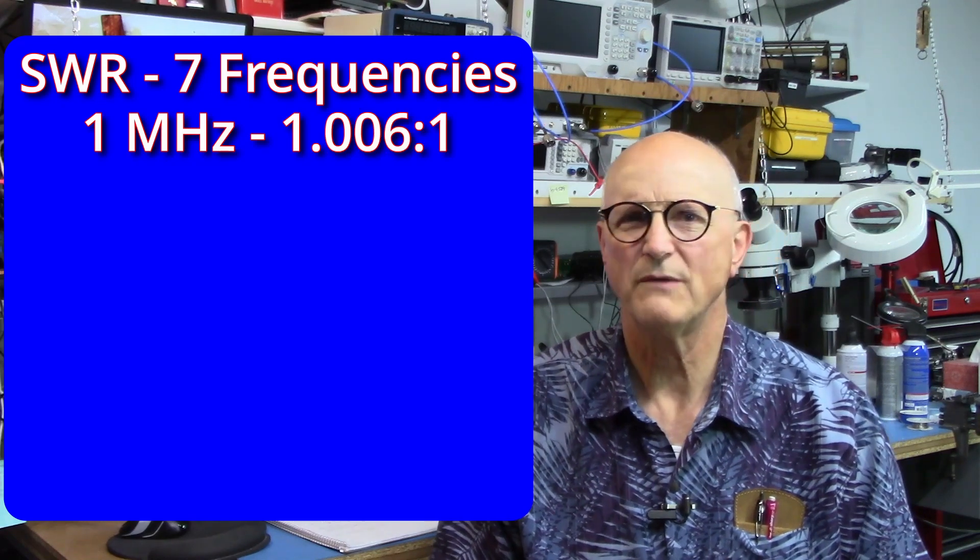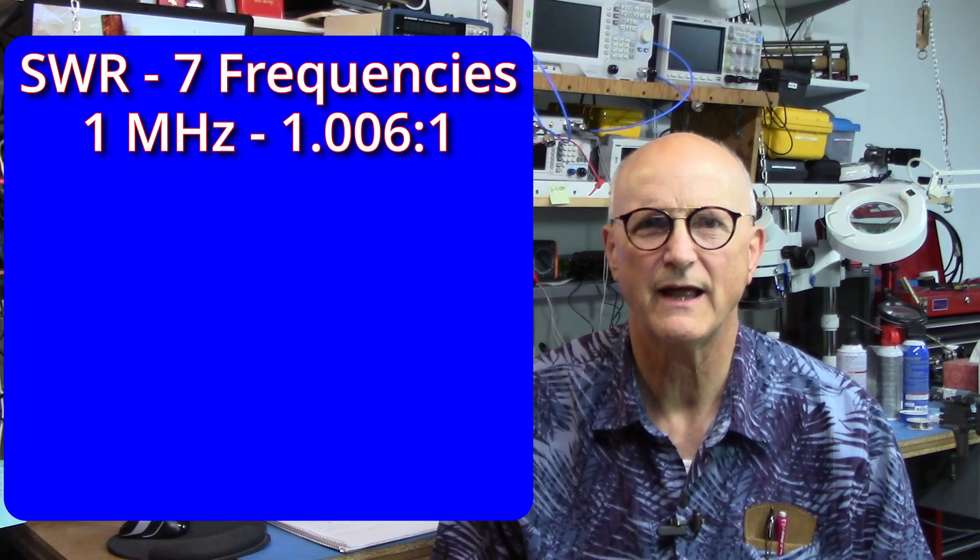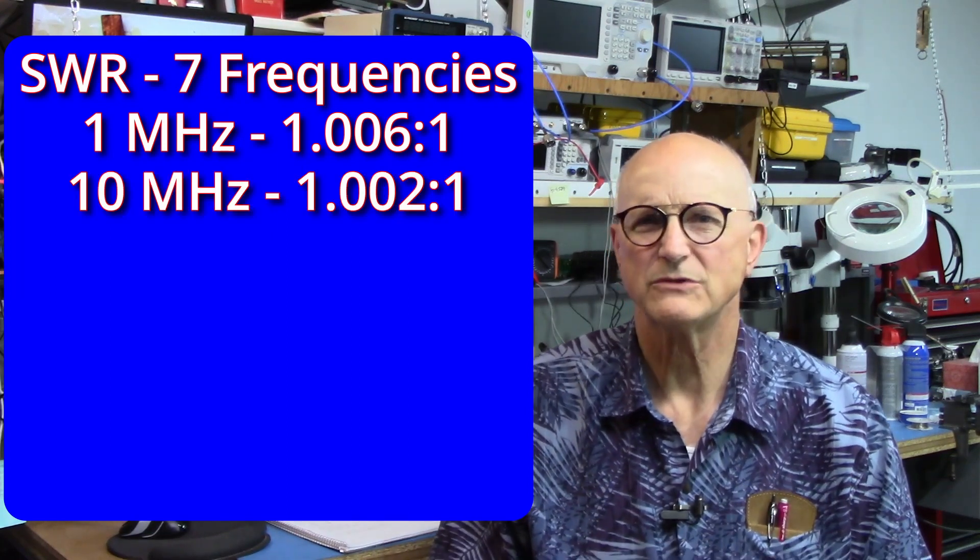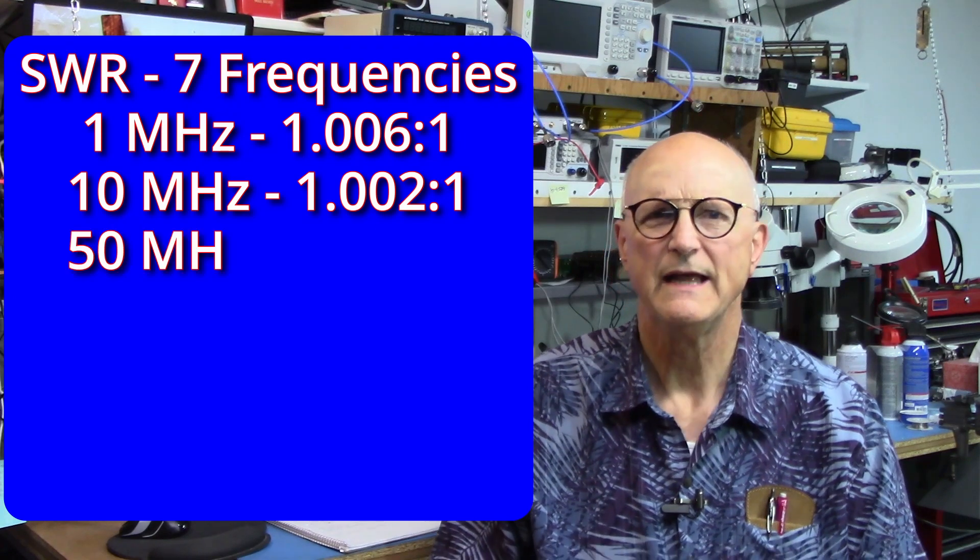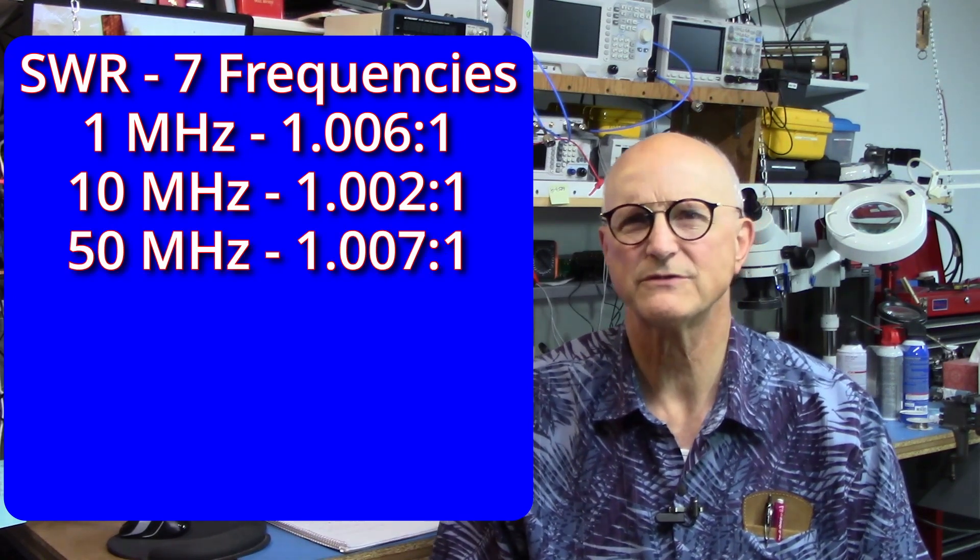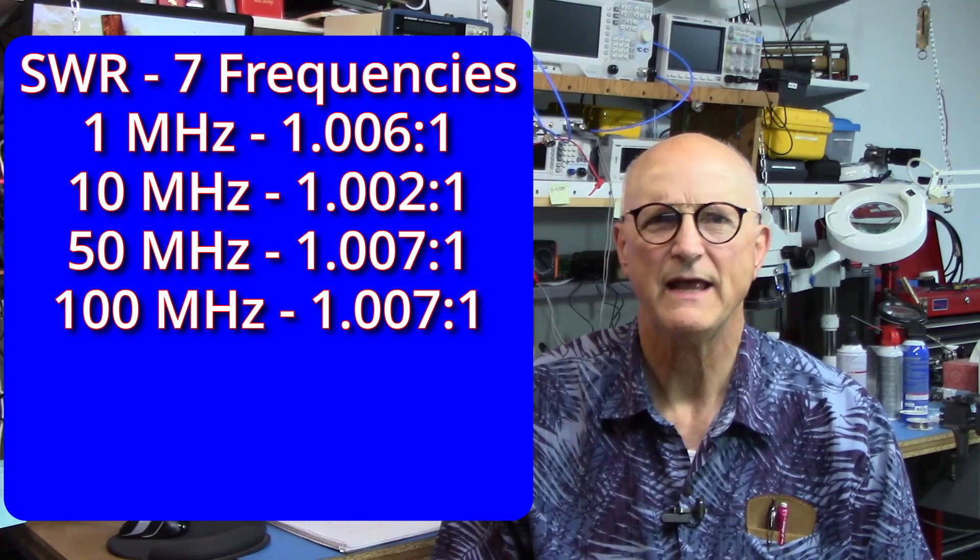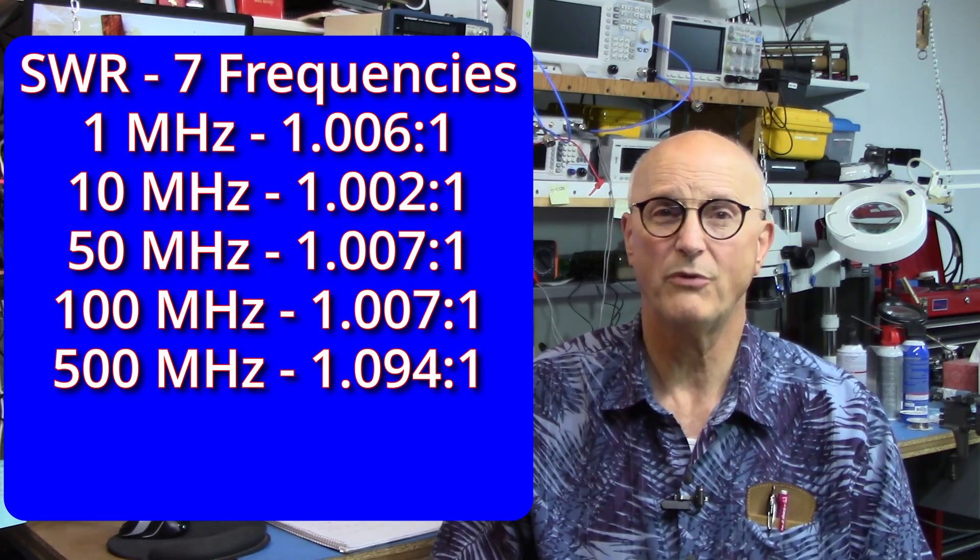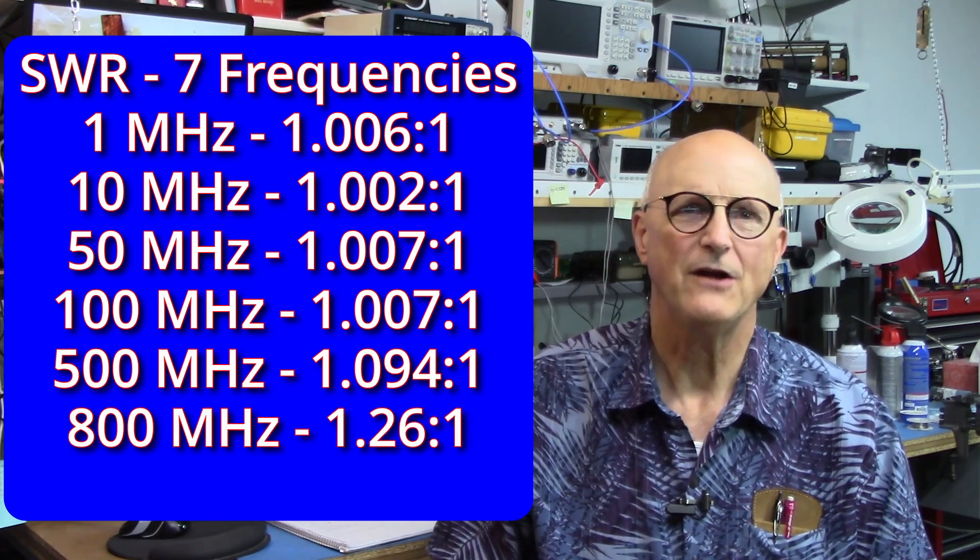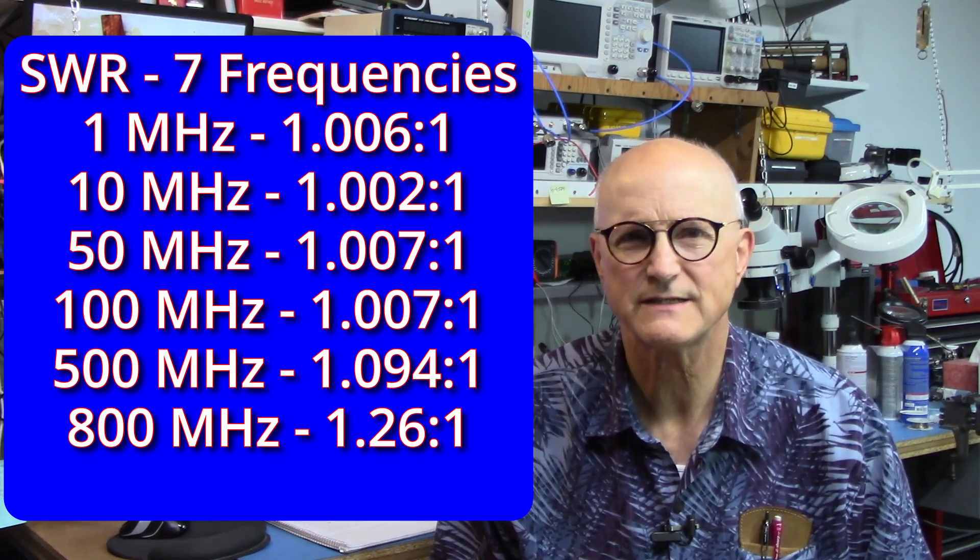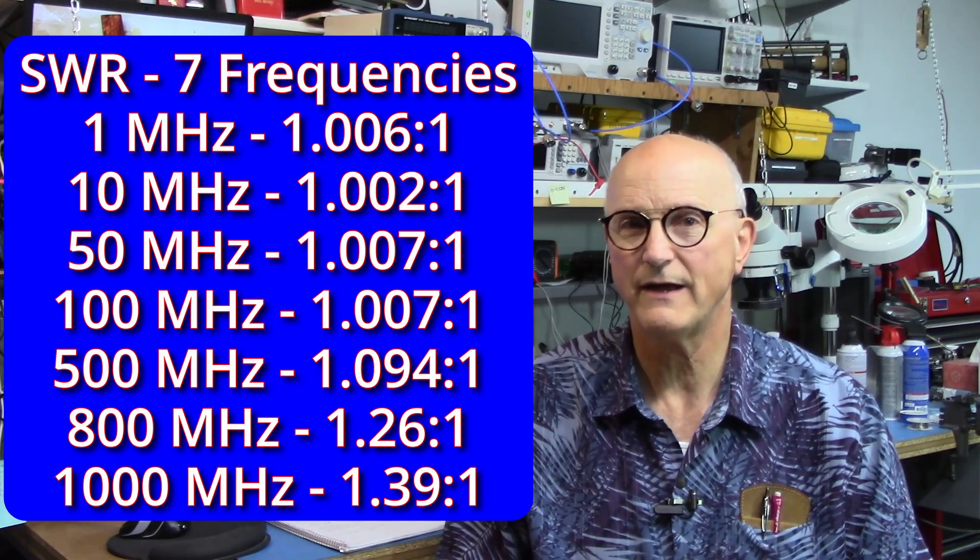At 1 megahertz, it was 1.006 to 1 SWR. At 10 megahertz, it was 1.002 to 1. At 50 megahertz, it was 1.007. At 100 megahertz, it was 1.007. At 500 megahertz, it was 1.094. At 800 megahertz, it was 1.26. And at 1 gigahertz, it was 1.39 to 1. We're talking about SWRs that are below 1.1 to 1 up to 500 megahertz and below 1.4 to 1 to 1 gigahertz.